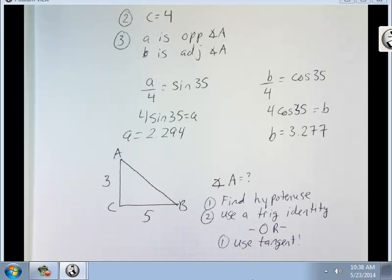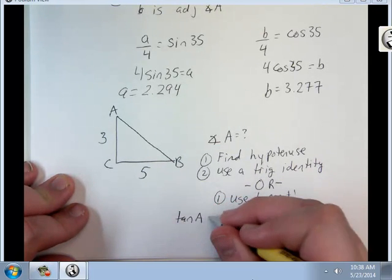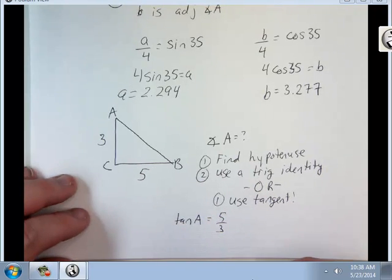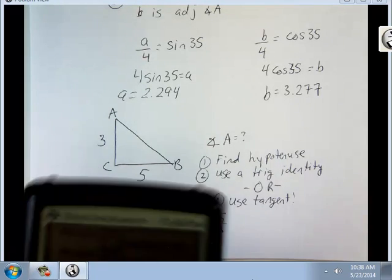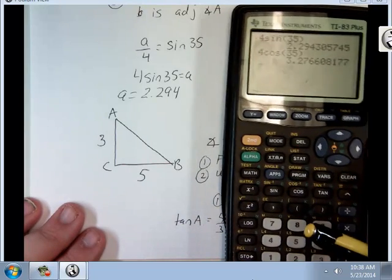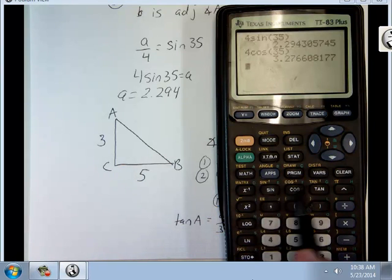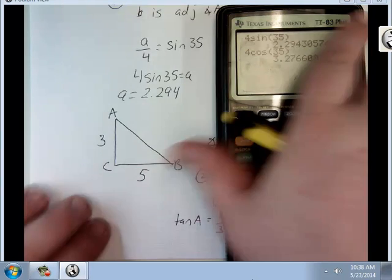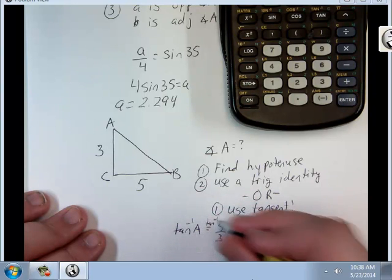So I'm going to show you tangent first. Tangent of A equals 5 over 3. And this is going to be tough to do. So hopefully it's kind of visible on my screen here. See how each of these trig buttons has the inverse function there? What you're going to do is take tan inverse of both sides. So A equals tan inverse 5 over 3.